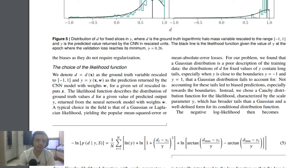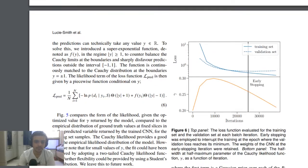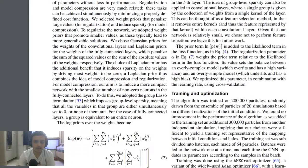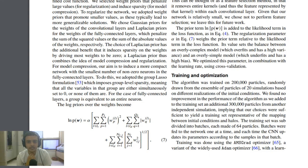They also explained how they trained and optimized. The algorithm was trained on 200,000 particles randomly drawn from an ensemble of 20 simulations based on different realizations and initial conditions. There was no further improvement in performance as they added more particles from an independent simulation.